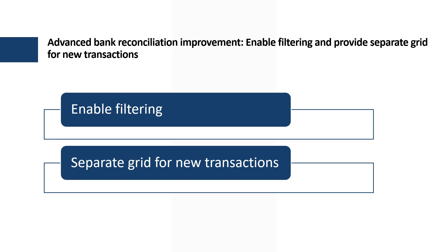The first feature, called Advanced Bank Reconciliation Improvement, enables filtering and provides a separate grid for new transactions. This feature provides two enhancements: the ability to apply filters on bank transactions and bank statement records, and a separate grid for new transactions.